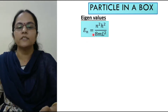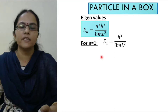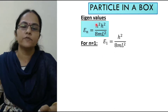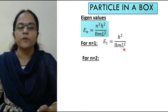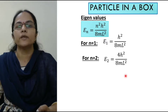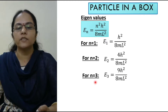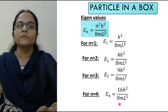The general formula is En equals n² h² by 8mL². For n equals 1, E1 equals h² by 8mL². For n equals 2, E2 equals 4h² by 8mL². For n equals 3, E3 equals 9h² by 8mL². For n equals 4, E4 equals 16h² by 8mL².